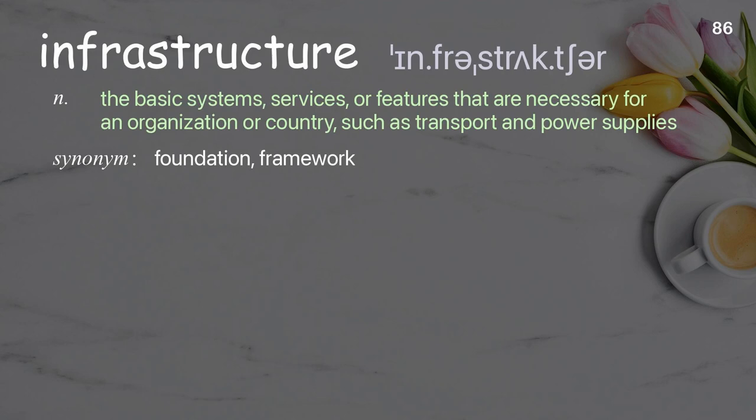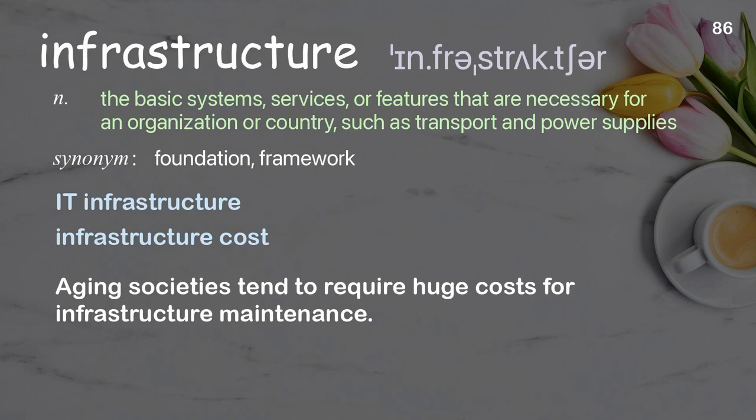Infrastructure: The basic systems, services, or features that are necessary for an organization or country, such as transport and power supplies. Examples: I.T. infrastructure, infrastructure cost. Aging societies tend to require huge costs for infrastructure maintenance.